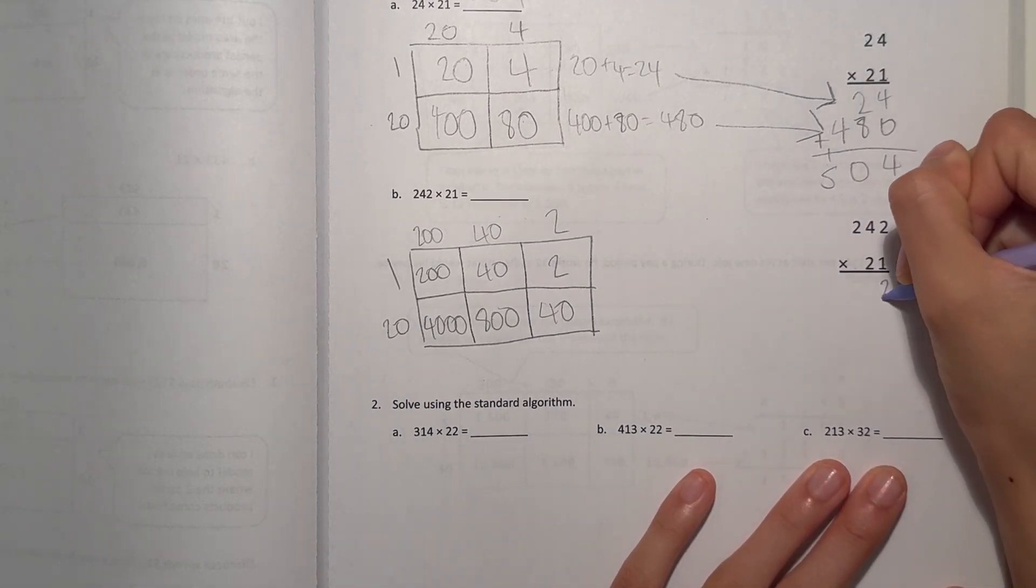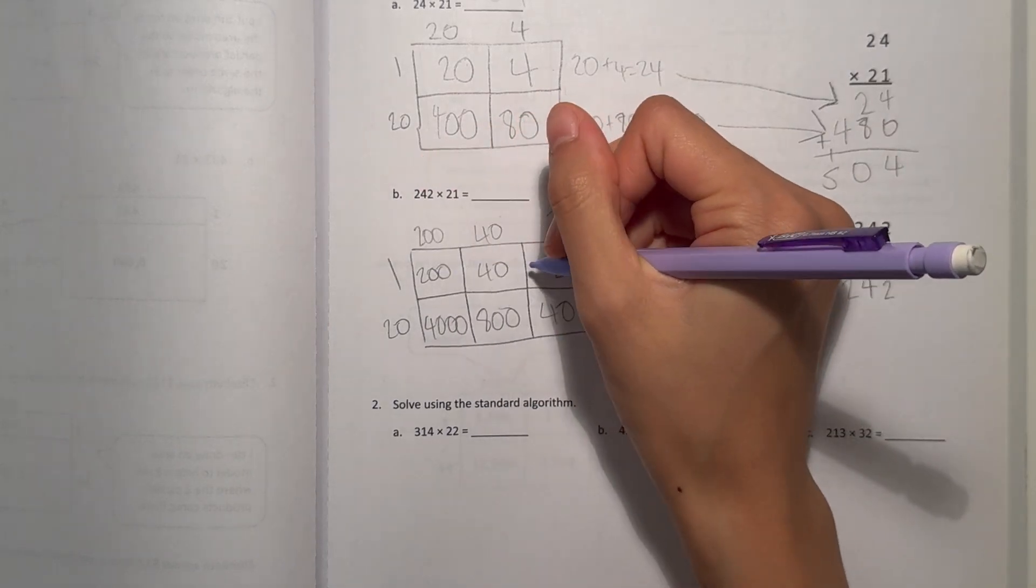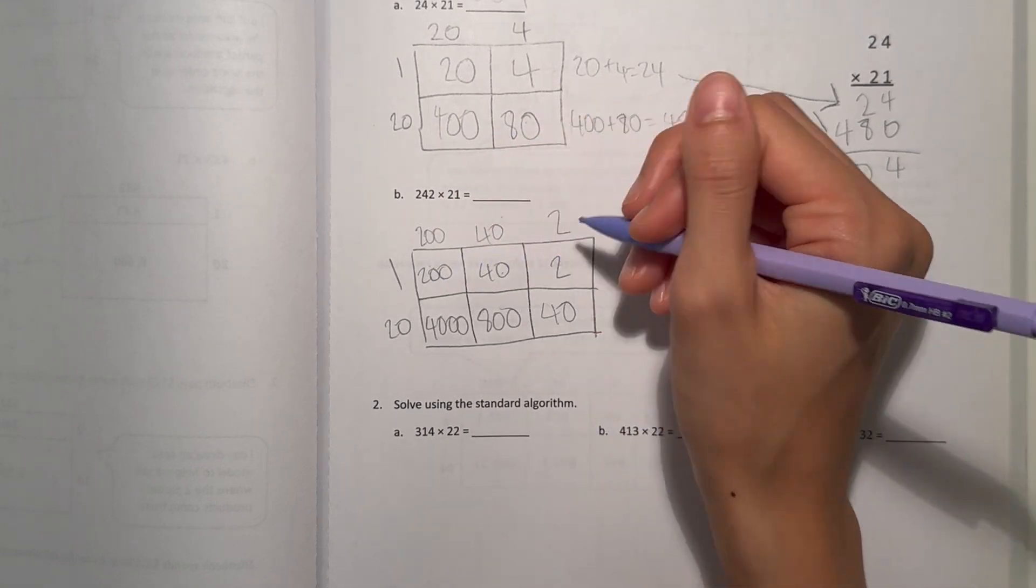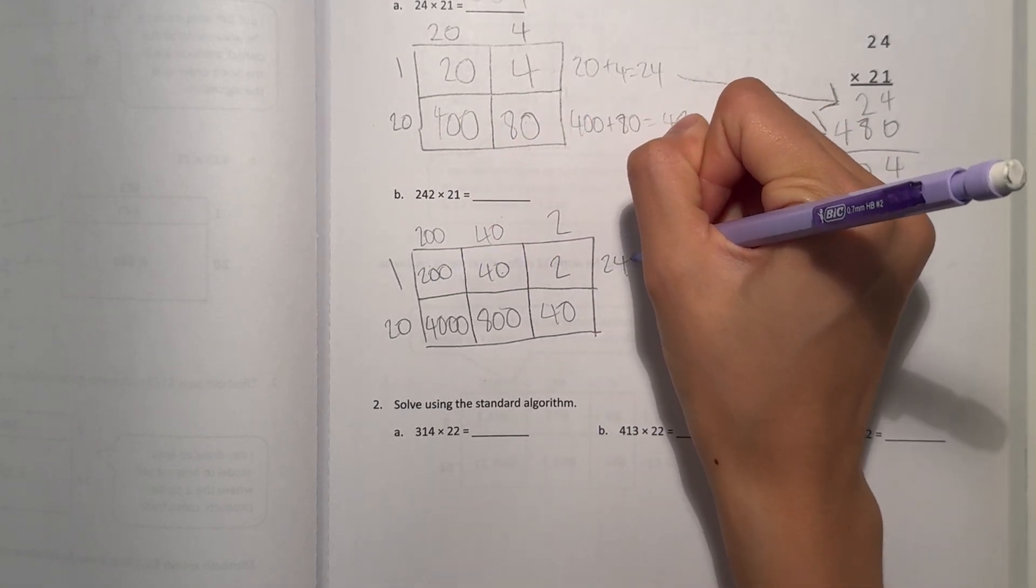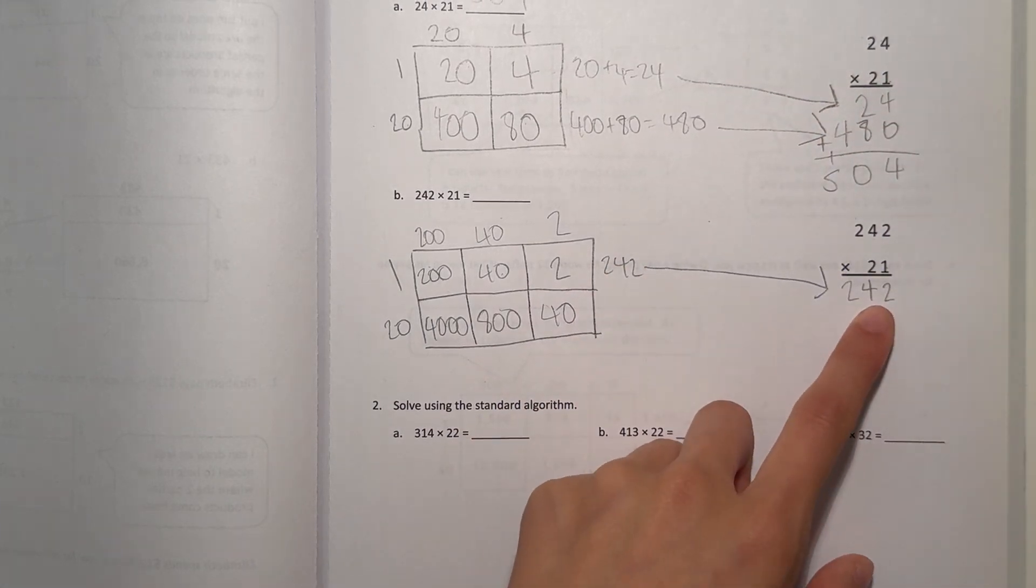2 times 1 is 2. 4 times 1 is 4. And 2 times 1 is 2. And we add these numbers here. 242. That's 242. So let's draw our arrows. So this is the same as 242.